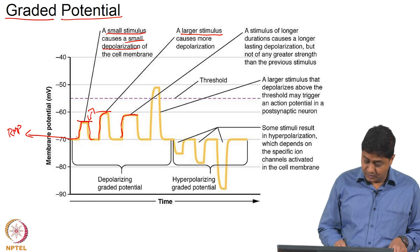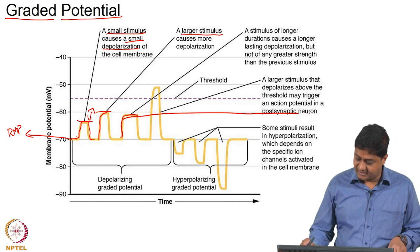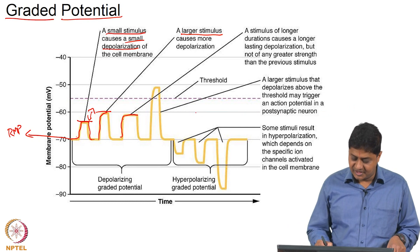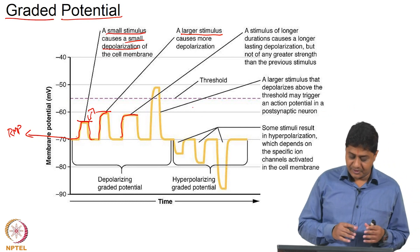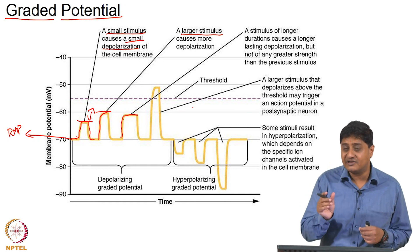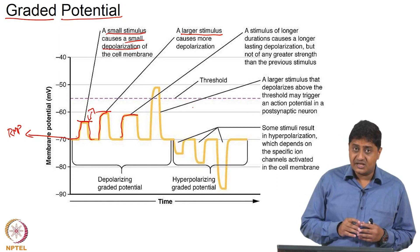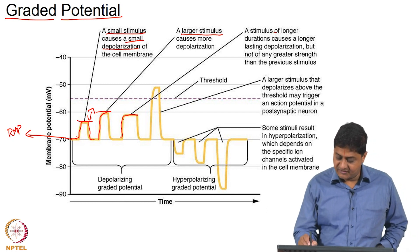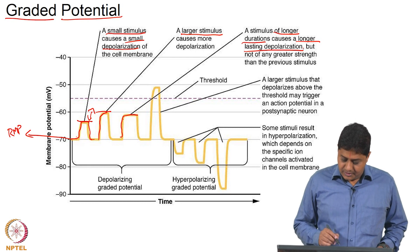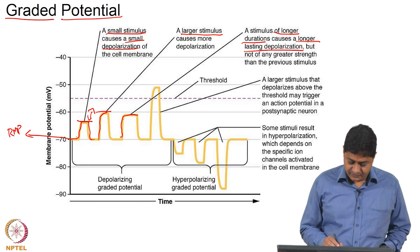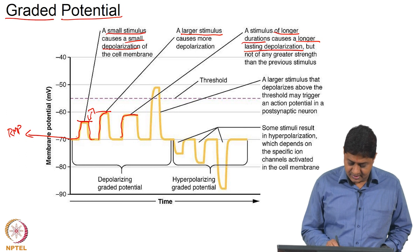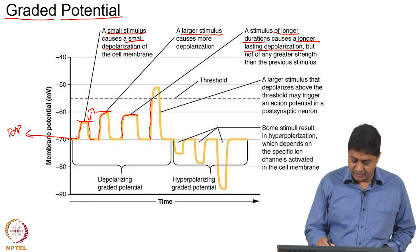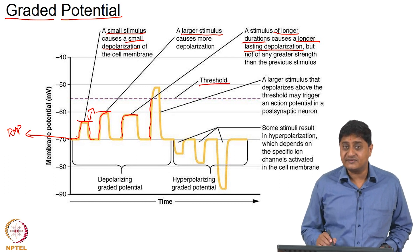If the stimulus lasts for a longer duration, the response also lasts for a longer duration — sometimes for several seconds. In contrast, action potential, which we will discuss in future, will be relatively brief. Graded potentials can last for a relatively long period. If the depolarization caused by the stimulus is above a certain point — which we call the threshold — it is going to cause what is called an action potential. That topic we will discuss later.